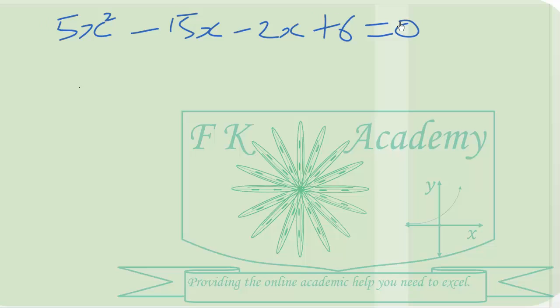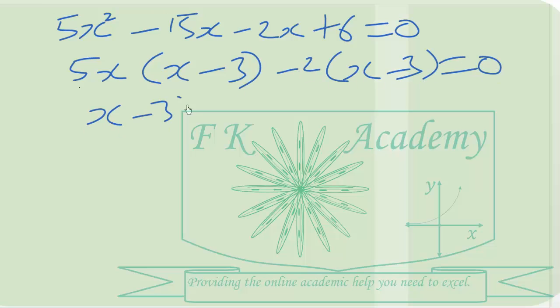We can now quickly factor and simplify. So when we collect the factors, we have x minus 3 times 5x minus 2 equals 0.